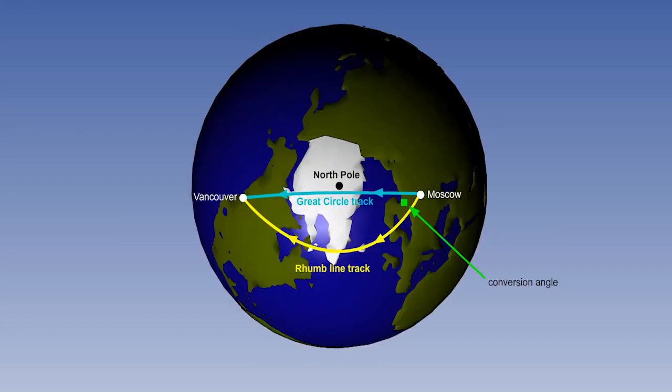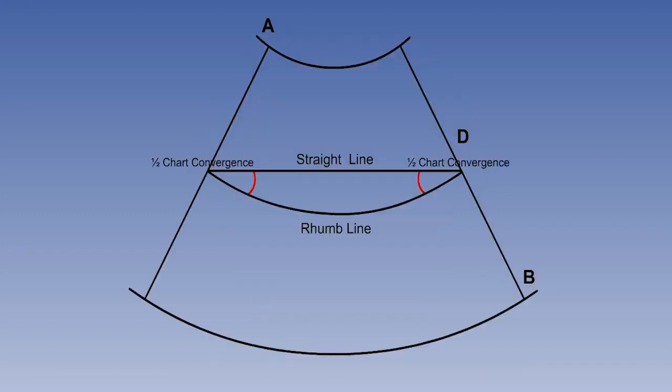What about conversion angle? The difference between a rhumb line and a great circle on the earth is called conversion angle, and has the value of half the convergency. The equation is that conversion angle equals half change of longitude times sine mean latitude. However, on a chart, the difference between a rhumb line and a straight line track is not called conversion angle, but it does have the value of half chart convergence. Its equation is that half chart convergence equals half change of longitude times sine of the parallel of origin.